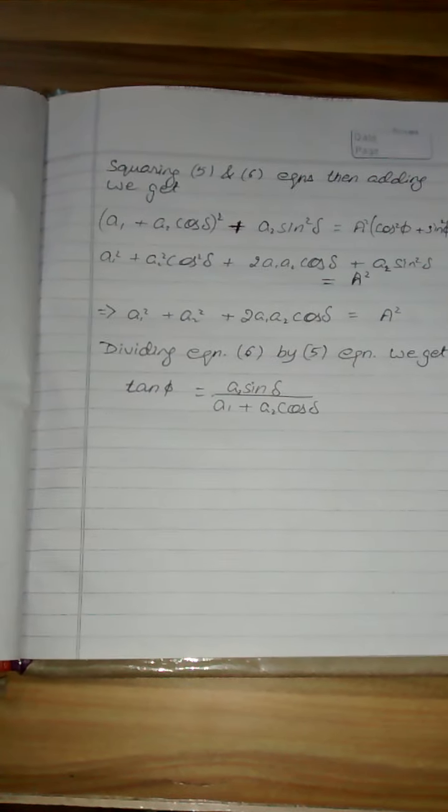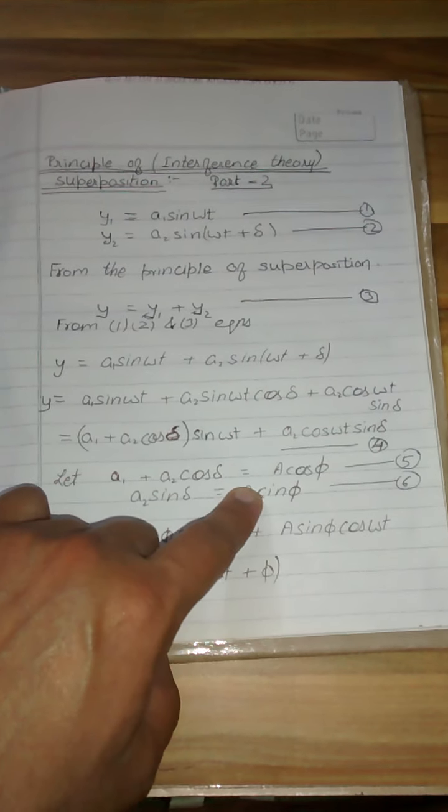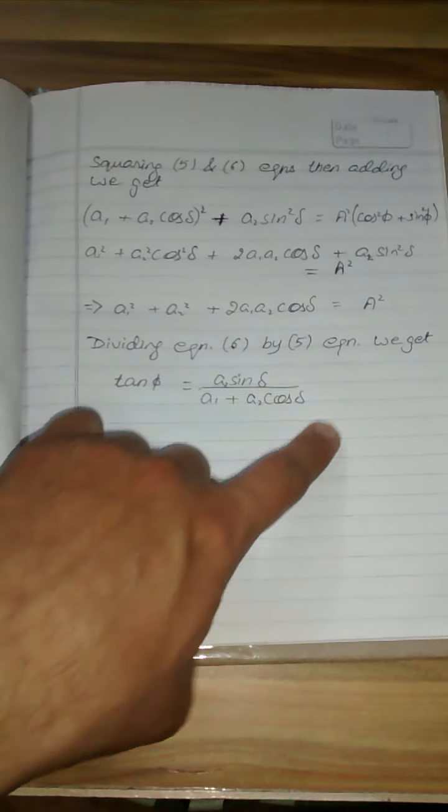For calculating phi, we divide the sixth equation by the fifth. We obtain tan phi, and we take the reciprocal of phi and we can take out the value.